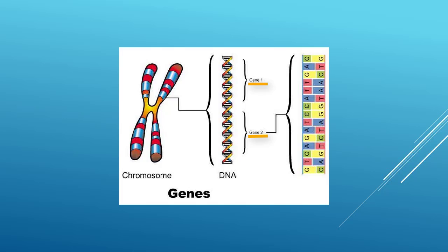We inherit this genetic information from both of our parents, which is stored in units called chromosomes. Humans have 23 pairs of chromosomes. One set of chromosomes comes from a parent's mother and the other comes from their father.